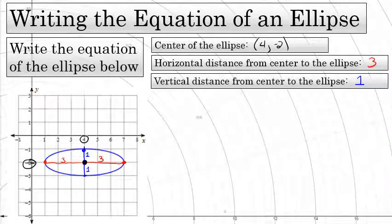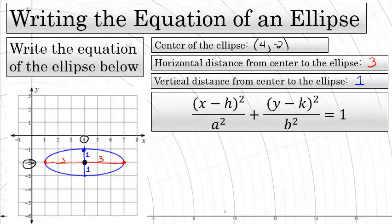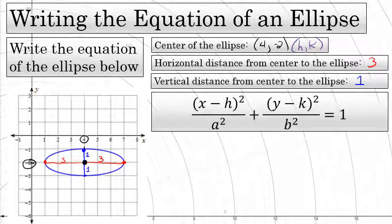We're going to use those values in the standard form of the equation of an ellipse: (x - h)² / a² + (y - k)² / b² = 1. The center is (h, k), the horizontal distance from the center to the edge left and right is the value of a, and the vertical distance from the center to the top and bottom is the value of b.